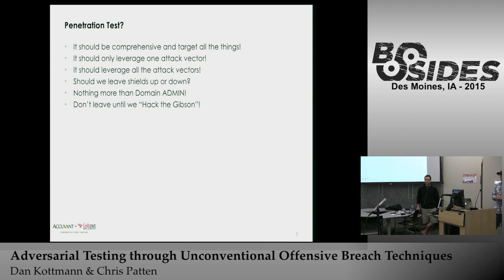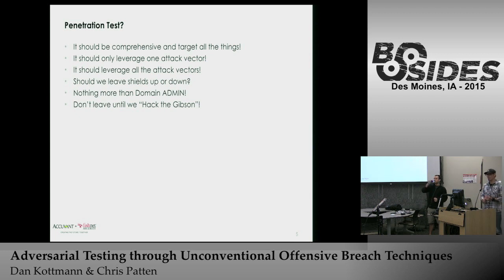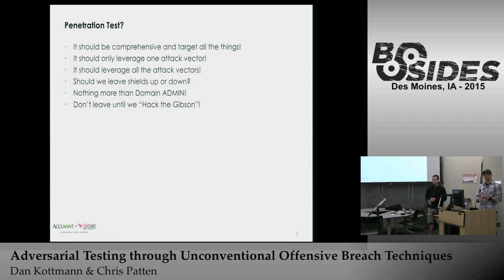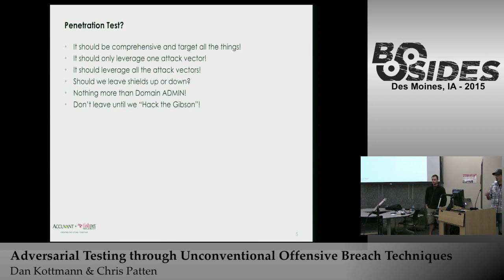When organizations go through a penetration test, they have a requirement for a system, host, or network. The problem is you hear things like it should be comprehensive — targeting all services, operating systems, and applications. It should leverage one attack vector: maybe you get in and concentrate on what you can get after that initial compromise, or leverage all attack vectors to identify vulnerabilities across all services.